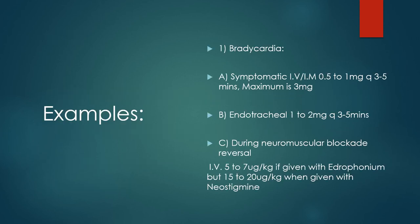Examples of situations where we can use atropine: Number one, bradycardia — in symptomatic bradycardia, we can give atropine intravenously or intramuscularly at a dose of 0.5 to 1 mg every 3 to 5 minutes, with a maximum of 3 mg. Endotracheally: 1 to 2 mg every 3 to 5 minutes. During neuromuscular blockade reversal, we can give atropine IV at 5 to 7 mcg/kg if administering with edrophonium. If using neostigmine instead, the dosage is higher at 15 to 20 mcg/kg.